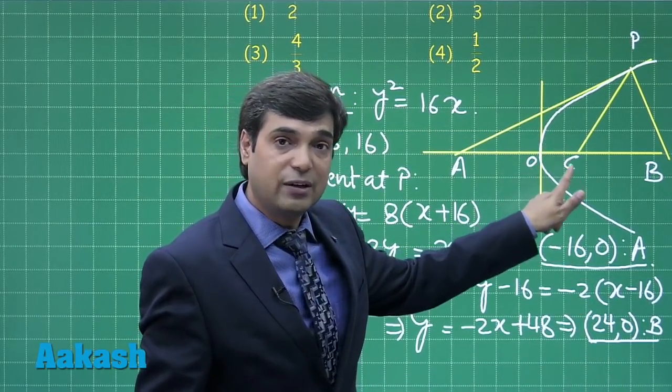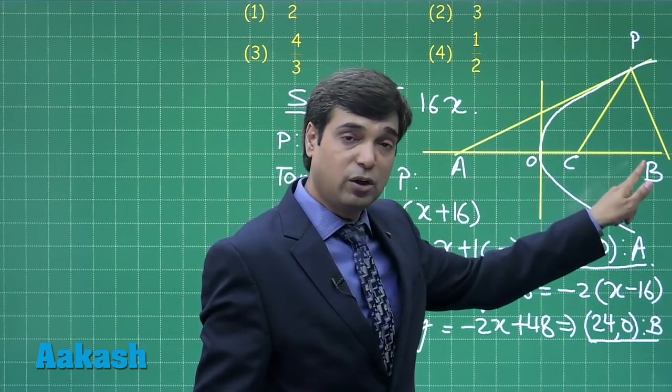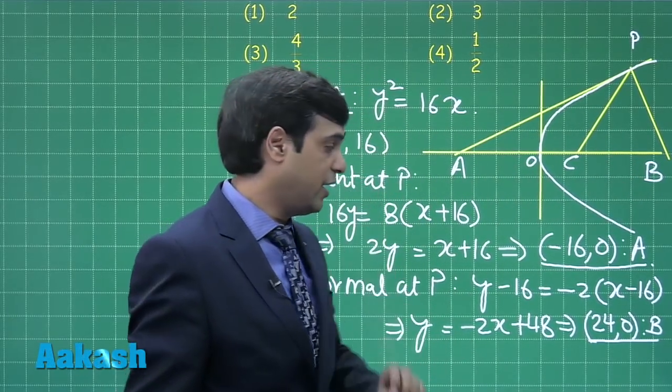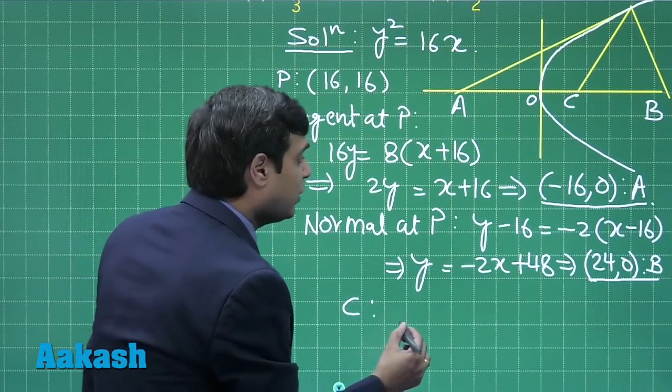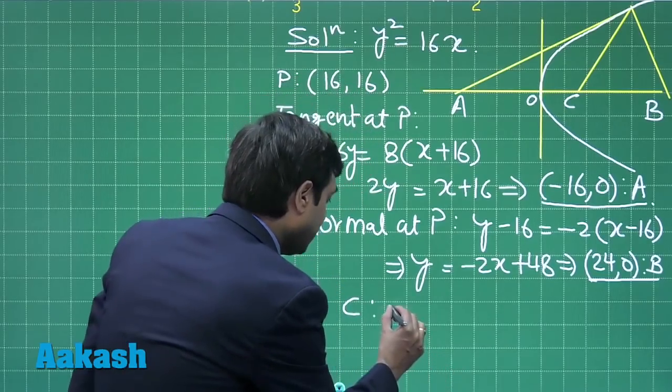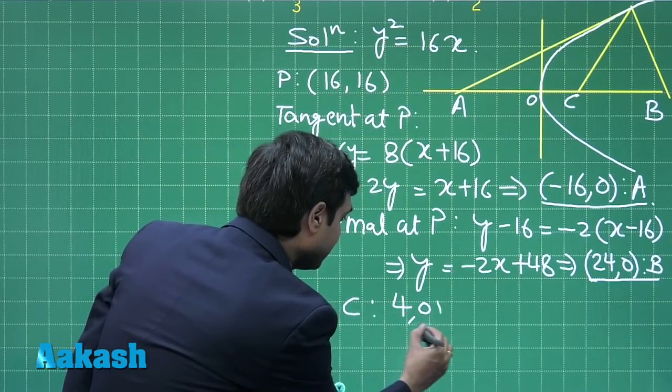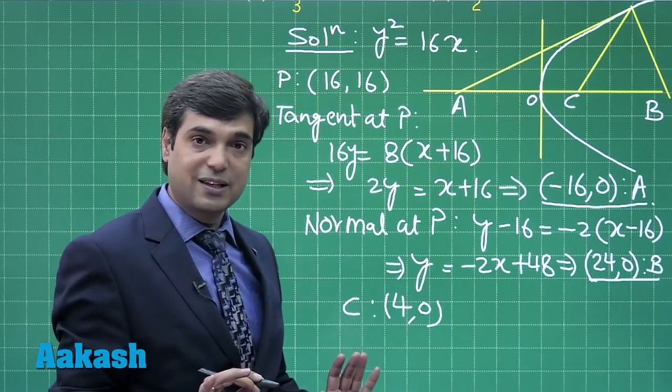We got coordinate for A, coordinate for B. C which is the center of the circle, also midpoint of A, B, we can find the coordinates for C as midpoint of A, B which gives me (4, 0).